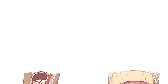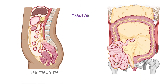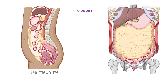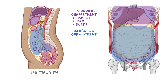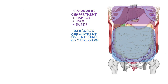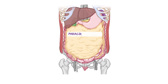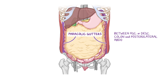The peritoneal cavity as a whole is divided by the transverse mesocolon into a supracolic compartment and an infracolic compartment. The supracolic compartment contains the stomach, liver, and spleen. The infracolic compartment is located posterior to the greater omentum and contains the small intestine, as well as the ascending and descending colon. Communication between the two compartments happens through the paracolic gutters, which are grooves between the lateral aspect of the ascending or descending colon and the posterolateral abdominal wall.